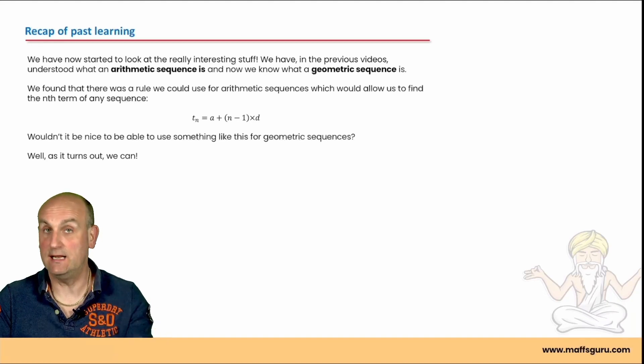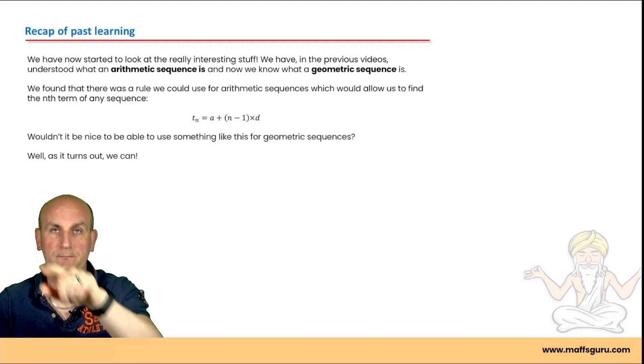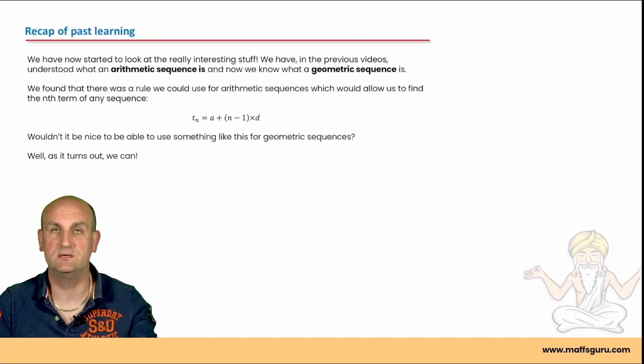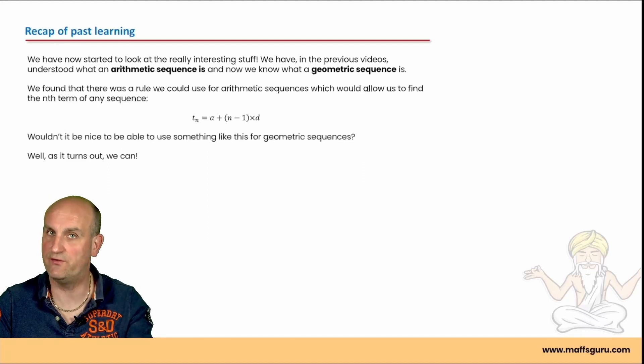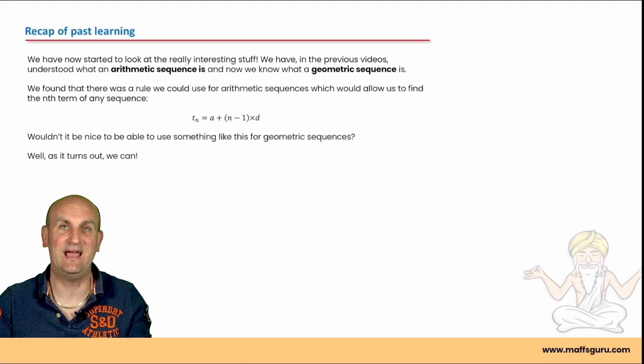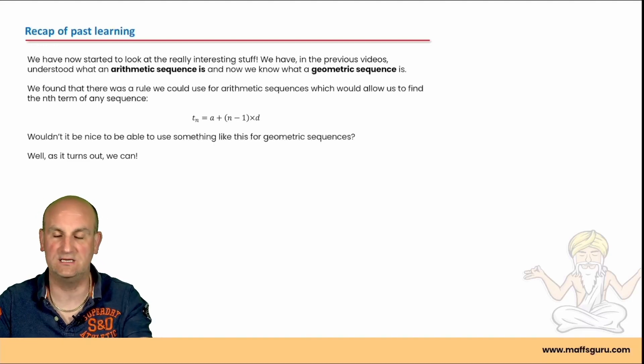Now, in our past learning, particularly in the last video, we talked about what the geometric sequence was. That's one that multiplies to get from term to term to term. We looked at how we can find common ratios, which only ever multiplies never divides. And how we can use our CAS to graph them and create sequences.